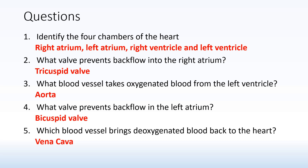Question three: what blood vessel takes oxygenated blood from the left ventricle? Remember the left ventricle has a larger, thicker muscular wall because it's pumping blood to the rest of the body — and that main vessel is the aorta. Question four: what valve prevents backflow in the left atrium? That is the bicuspid valve. Question five: which blood vessel brings deoxygenated blood back to the heart? As it's coming back to the heart, it must be a vein — and it is the vena cava.